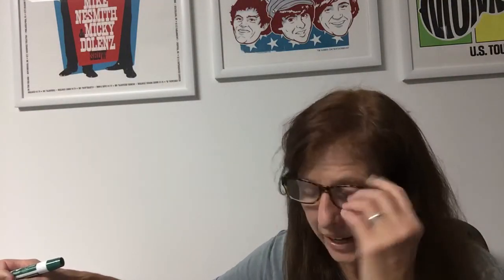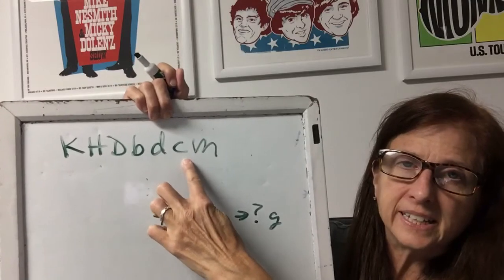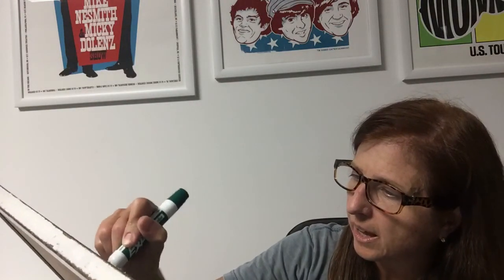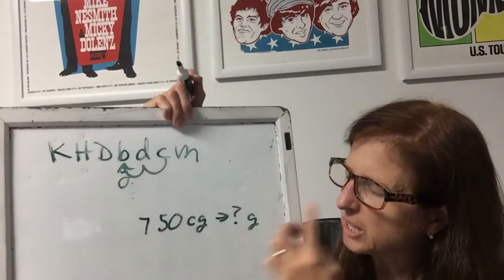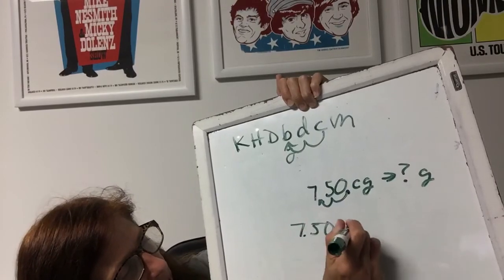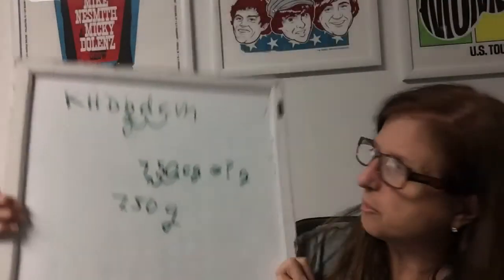Example four says we have 750 centigrams and we want to know how many grams that is. What you do is start on centi and see how many frog hops it takes to get to the basic unit where gram would be — it takes two frog hops. Then you take the decimal point and move it the same number of places in the same direction: one, two. So the answer is 7.50 grams. You just frog hop in the direction that you go — and you remember it with King Henry's Daughter Bakes Delicious Chocolate Muffins.